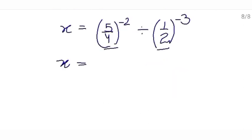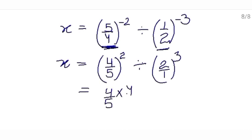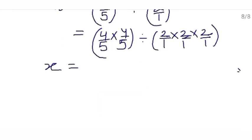Here bases are different and powers are also different. The power is negative, so we can make it positive by writing the reciprocal of the base. Reciprocal of 5 upon 4 is 4 upon 5, and now the power is positive: 2. Divided by reciprocal of base is 2 upon 1, and its power is positive: 3. So 4 upon 5 raised to the power 2 means 4 upon 5 multiplied by itself 2 times. So x equals 4 × 4 is 16 upon 5 × 5 is 25, divided by 2 × 2 × 2 is 8 upon 1.